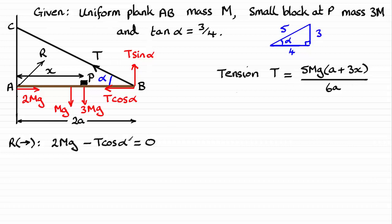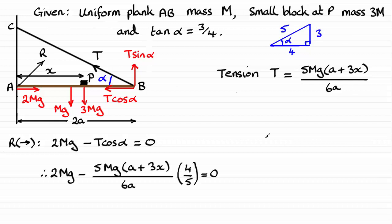And cos alpha — remember, cos alpha is adjacent over hypotenuse, so that ratio is going to be 4/5. So, substituting those values in, you're going to get this equation here.